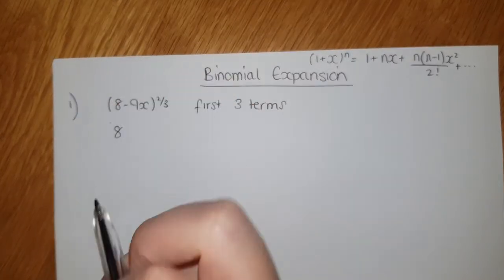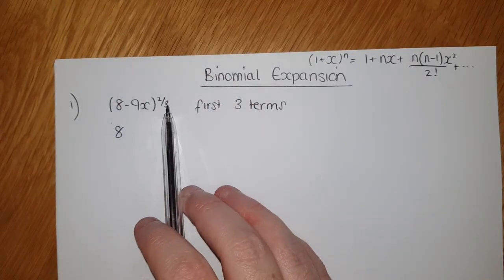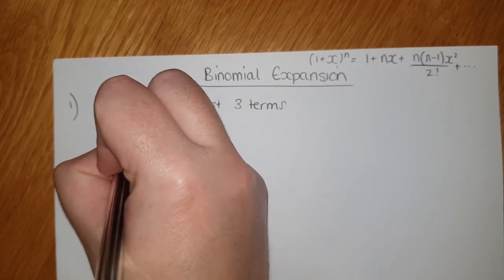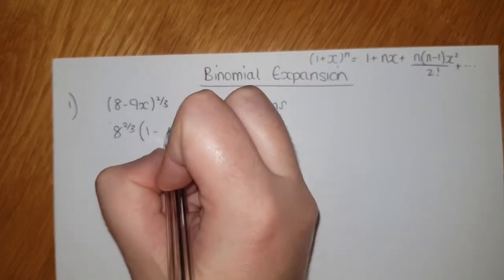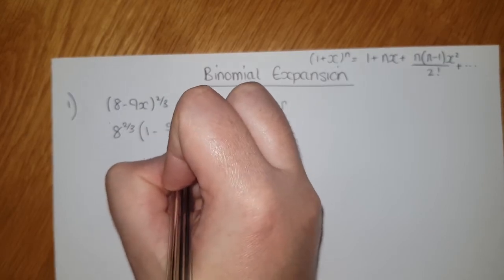So when I take the factor of 8 outside, I have to take the power with it, so 8^(2/3). And inside the bracket I'd have (1 - 9x/8)^(2/3).